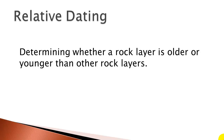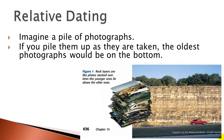Relative dating is just determining whether a rock layer is older or younger than other rock layers, without actually figuring out its exact or absolute age. A good way to think about this is to imagine a pile of photographs. Suppose someone in your family is just taking photos all the time, printing them out, and just piling them up in a box.